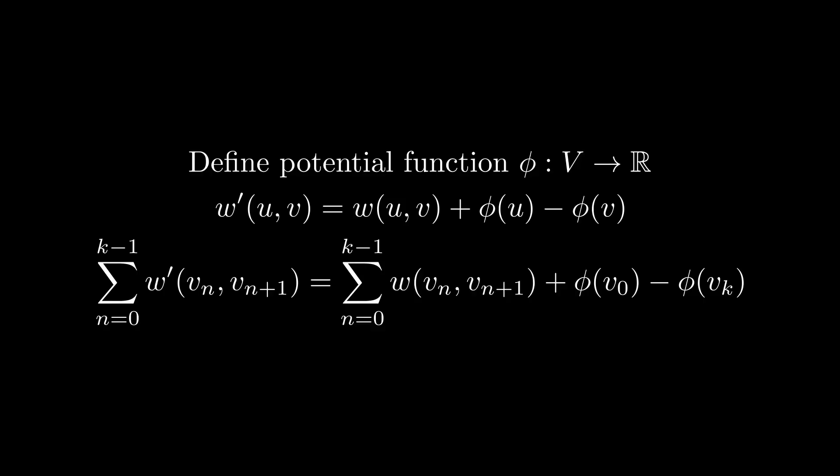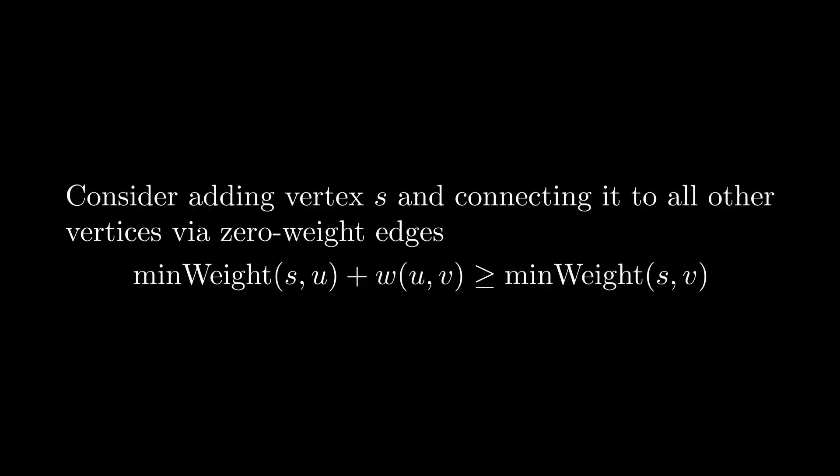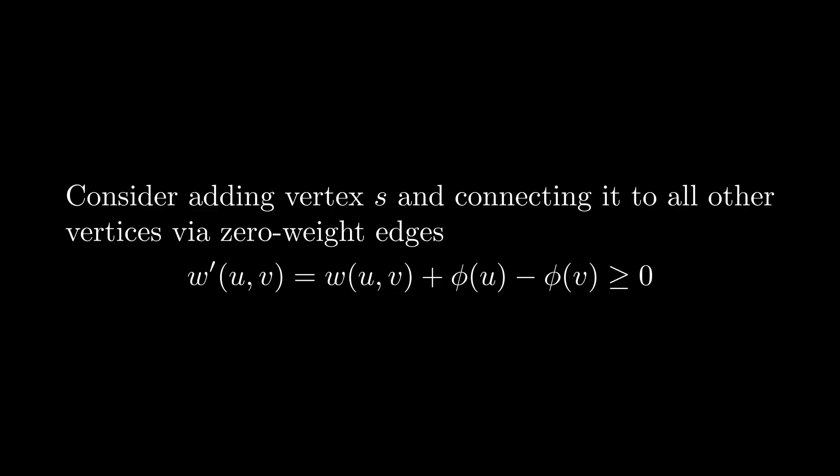Naturally, the follow-up question is how we would even define such a function. Well, consider the following construction. If we take our original graph G and add an additional vertex s with zero weight edges connecting s to every vertex, we then have that the minimum path weight from s to u plus w u v is greater than or equal to the minimum pathway from s to v, since the path s to u to v is a subset of all paths from s to v. If we define phi of u to be the minimum pathway from s to u, we therefore have that phi of u plus w of u v is greater than or equal to phi of v. Rearranging this then gives us that w of u v plus phi of u minus phi of v is greater than or equal to zero. Hence, this definition of phi satisfies the condition that w prime is greater than or equal to zero.